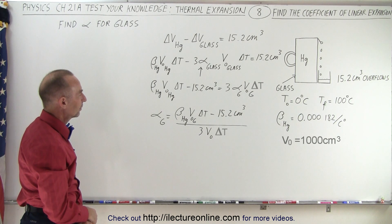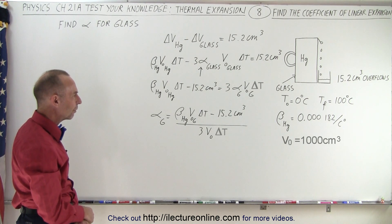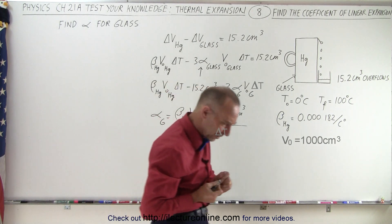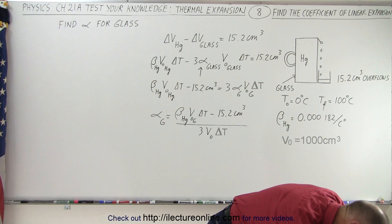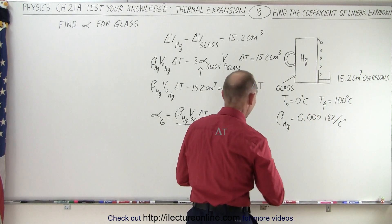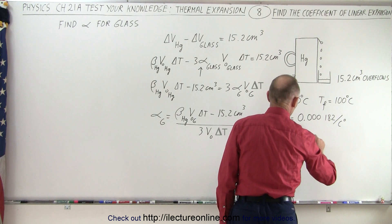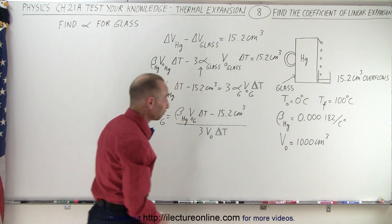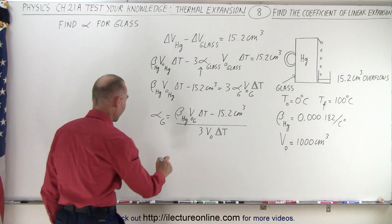Now we need to know the original volume for mercury and for the glass. Let me check if I forgot to copy something — and indeed I did. I forgot to include that the original volume was equal to 1,000 cubic centimeters. Without that, we couldn't do the problem. All right, let's go ahead and plug in all the numbers now that we know everything.